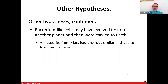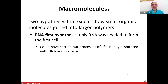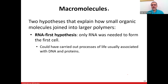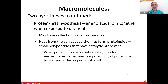After establishing where basic organic molecules came from, there are two hypotheses explaining how small organic molecules joined into larger macromolecules. The RNA-first hypothesis says RNA was needed to form the first cell and could have carried out processes of life usually associated with DNA. The protein-first hypothesis says amino acids came together to make protein molecules first.